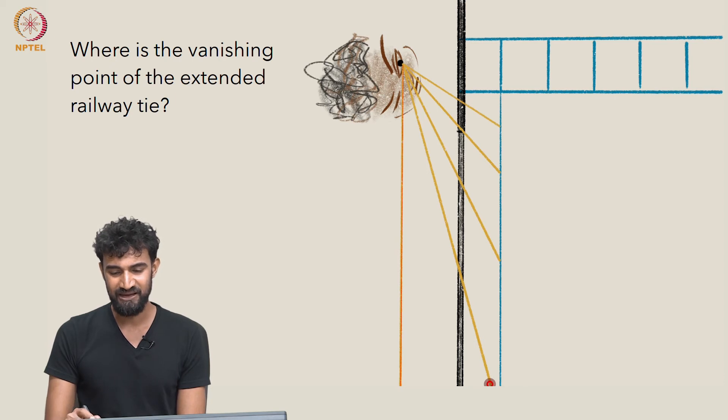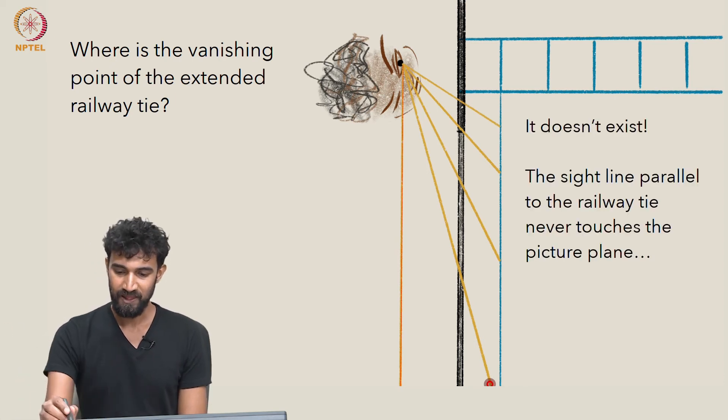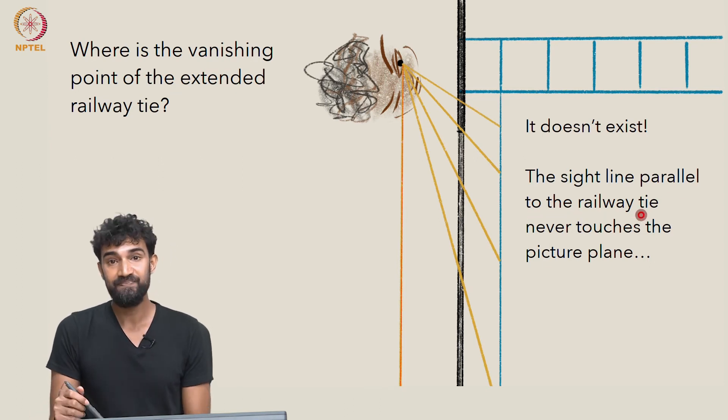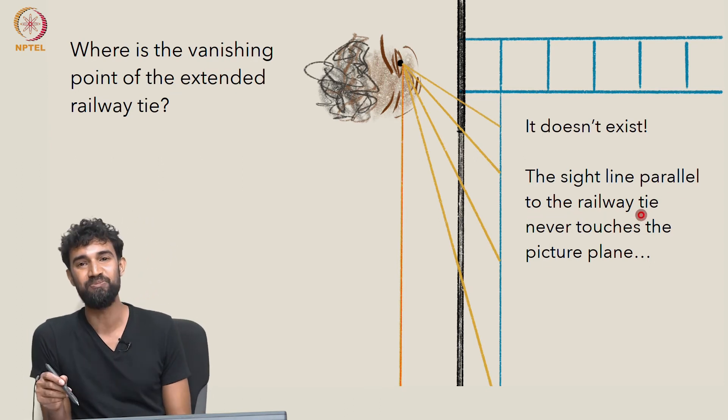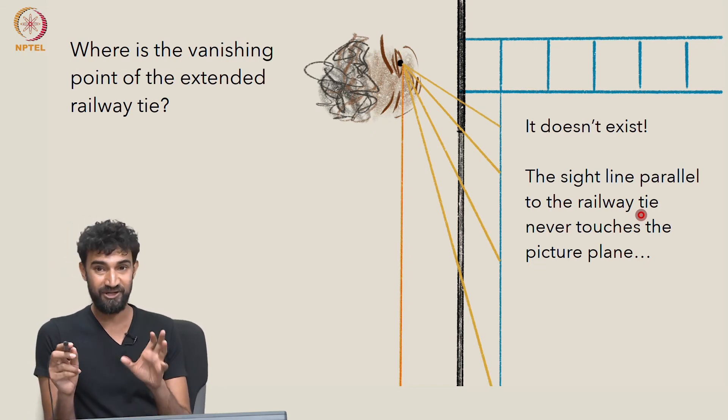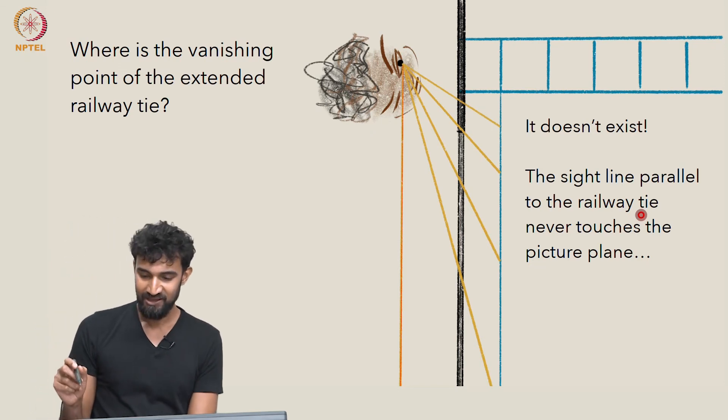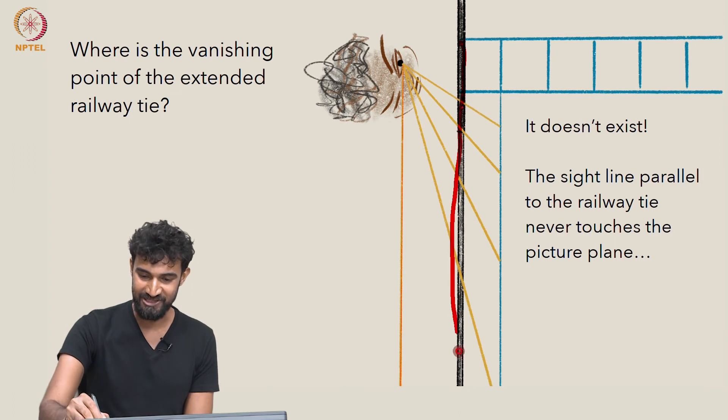But what's a bit new in this situation? Well, the sight line, which is parallel to the railway tie, is never going to touch the picture plane. It's never going to meet it. It's never going to create a vanishing point because it's parallel to the picture plane.